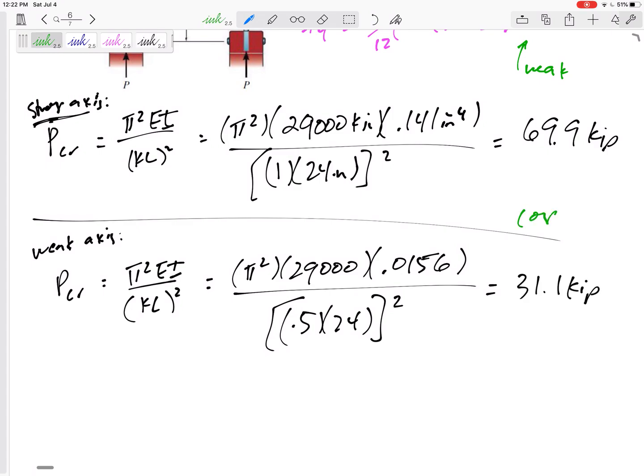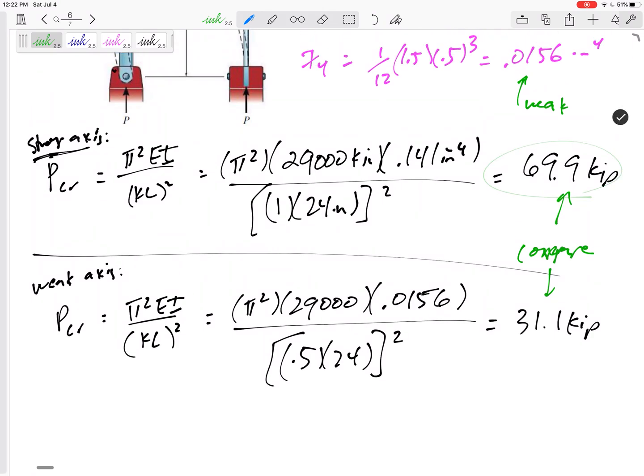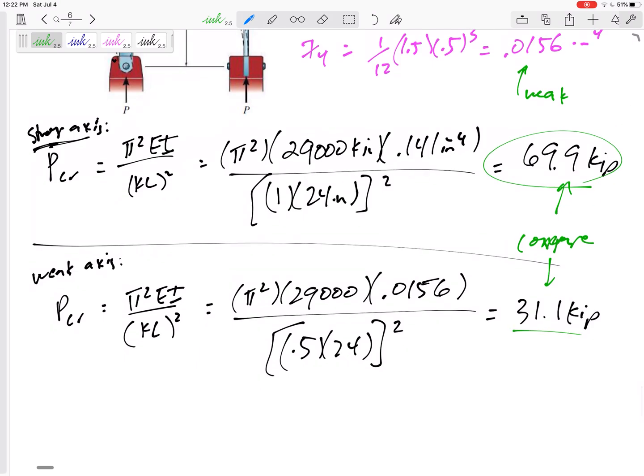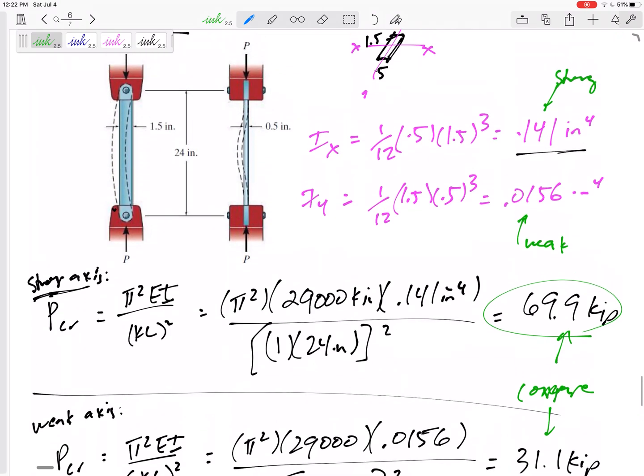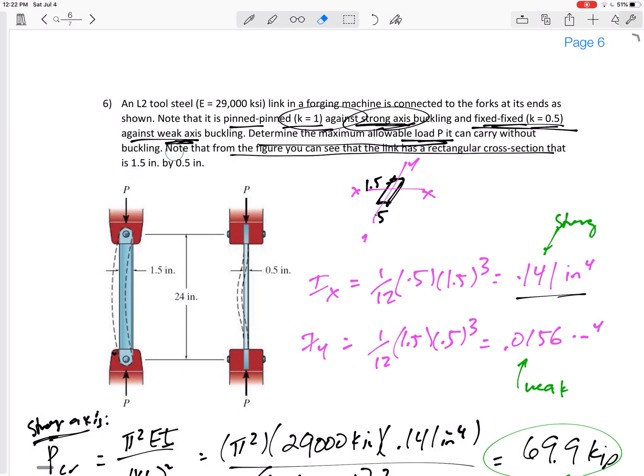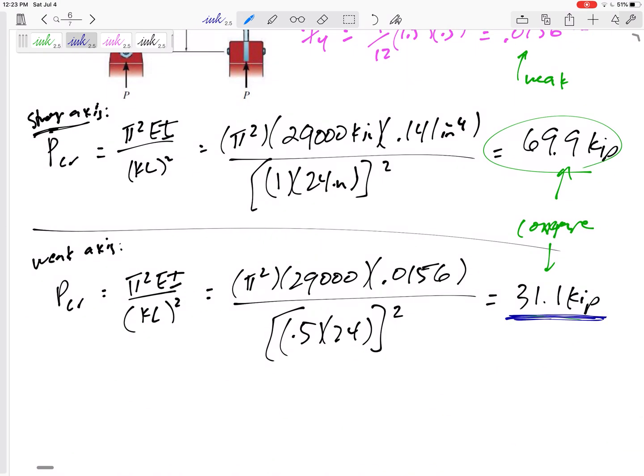Let's compare the two. If I apply a force up to 69.9, it's going to buckle against the strong axis. If I apply a force of 31.1, it's going to buckle about the weak axis. So let's answer the question. This might seem counterintuitive, but we've done this before. Determine the maximum allowable load P - do you see that the maximum allowable load we can give is the smaller one?